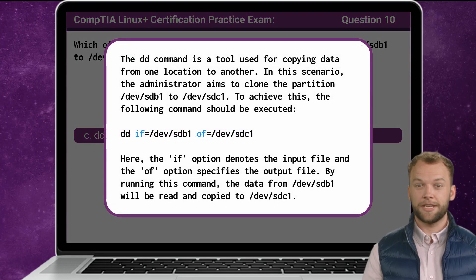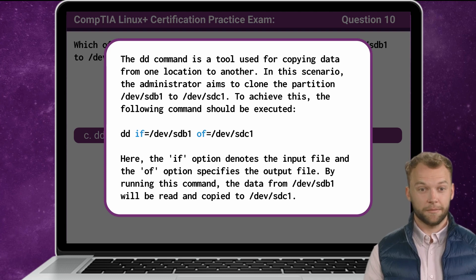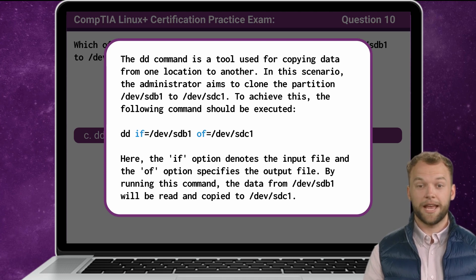The dd command is a tool used for copying data from one location to another. In this scenario, the administrator aims to clone the partition /dev/sdb1 to /dev/sdc1. To achieve this, the following command should be executed: dd if=/dev/sdb1 of=/dev/sdc1. Here, the if option denotes the input file, and the of option specifies the output file. By running this command, the data from /dev/sdb1 will be read and copied to /dev/sdc1.